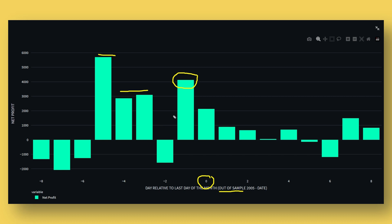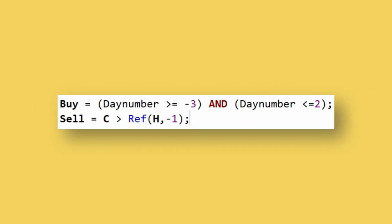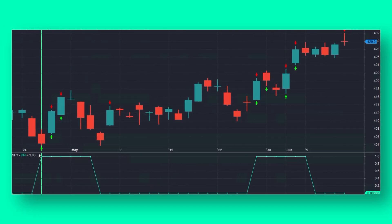Days prior to minus one also show some potential, so let's convert this into a simple trading system. The code snippet on my screen comes from AmiBroker, the trading system development software I use, where the buy and sell rules based on this seasonality edge can be written in literally two lines. I've decided on an entry window starting from day minus three and ending on day plus two. For the exit, I'm using one of my favorite price action exits: today's closing price is above yesterday's high.